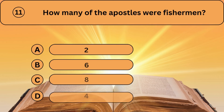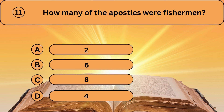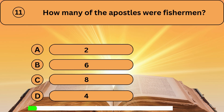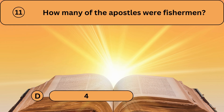Question eleven. How many of the apostles were fishermen? A. 2. B. 6. C. 8. D. 4. Four is the correct answer.